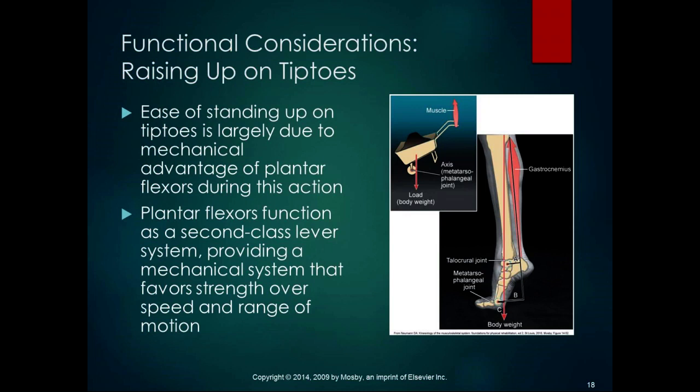Raising up on toes relies on the mechanical advantage of the plantar flexors — this is a second-class lever system that favors strength over speed and range of motion. In a second-class lever (ARF), the axis is on one side, the resistance is in the middle, and the force is at the end. Our axis is the first metatarsophalangeal joint, the load is body weight going through the middle, and the plantar flexors provide the force pulling up. Please post questions to Ask Loretta if this isn't clear.